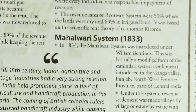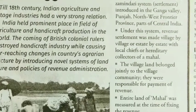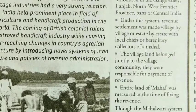The third one is the Mahalwari System, introduced in 1833 under William Bentinck. This was basically a modified form of the Zamindari system, introduced in the Ganga valley, Punjab, the Northwest Frontier Province, and parts of Central India. Under this system, revenue settlement was made village by village, or estate by estate, with local chiefs or hereditary collectors of a Mahal.